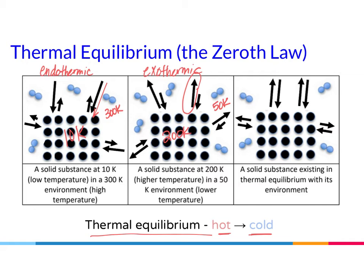Both of those examples will eventually reach thermal equilibrium — a solid substance existing in thermal equilibrium with its surroundings. They will both eventually have the same average kinetic energy. The zeroth law states that all objects want to come into thermal equilibrium with their surroundings, and they do so from hot to cold.